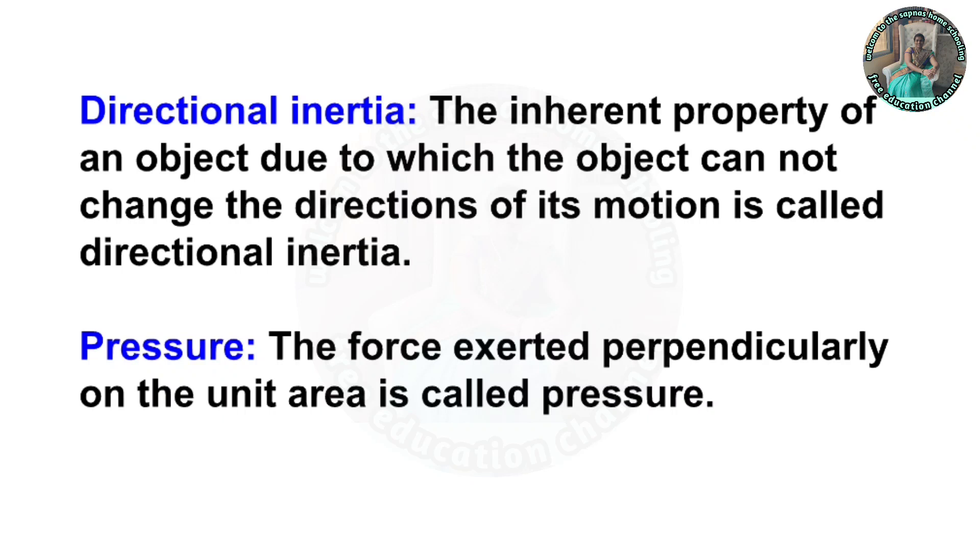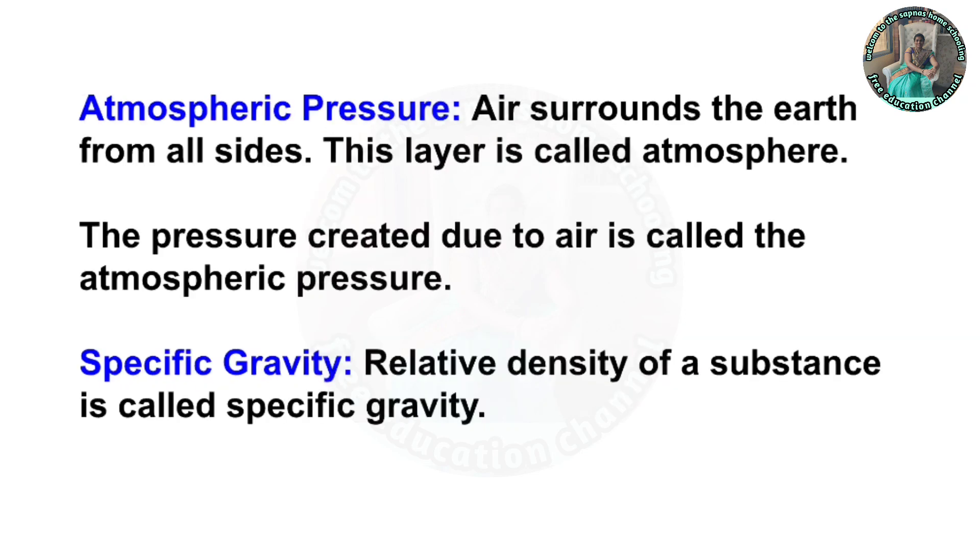Pressure: the force exerted perpendicularly on the unit area is called pressure. Atmospheric pressure: air surrounds the earth from all sides. This layer is called atmosphere. The pressure created due to air is called atmospheric pressure. Specific gravity: relative density of a substance is called specific gravity.